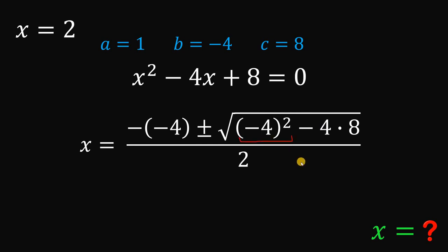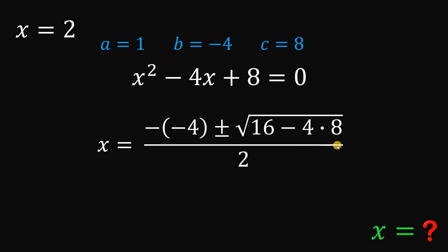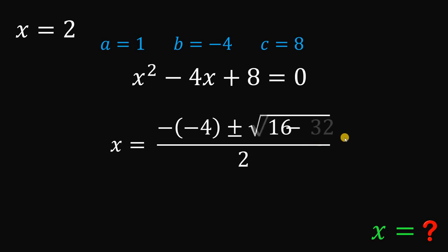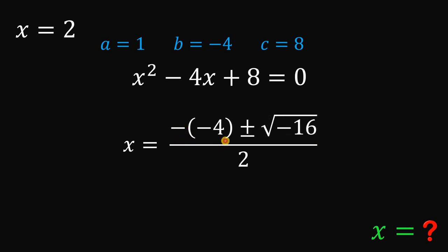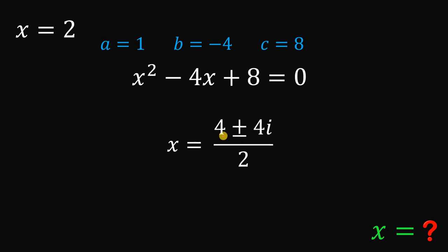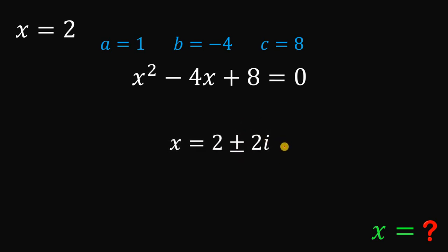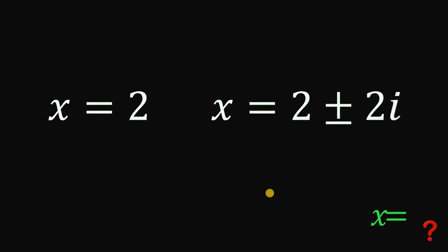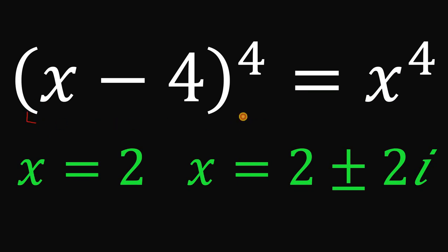Simplifying: negative 4 raised to the power of 2 gives positive 16; 4 times 8 gives 32; and 16 minus 32 gives negative 16. The negative of negative 4 gives positive 4. The square root of negative 16 is simply 4i. So we have 4 plus or minus 4i divided by 2, which gives us 2 plus or minus 2i. Therefore, there are 3 possible values of x that satisfy the equation x minus 4 raised to the power of 4 equals x raised to the power of 4: x equals 2, or x equals 2 plus or minus 2i. And as always, we are done.